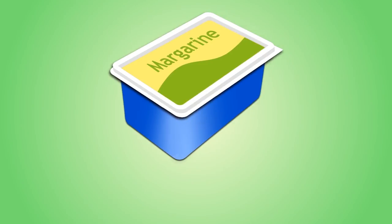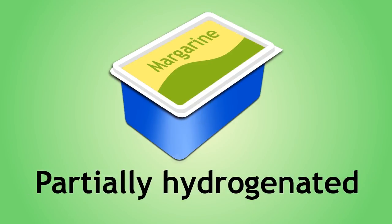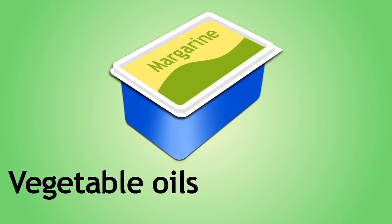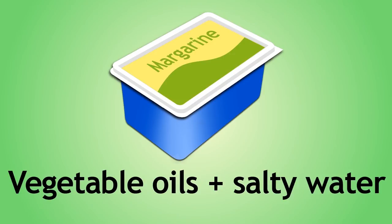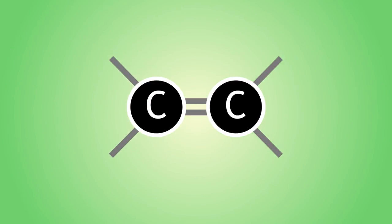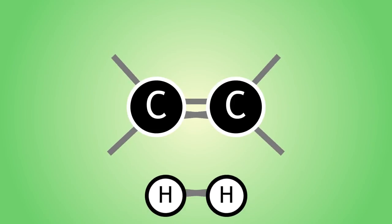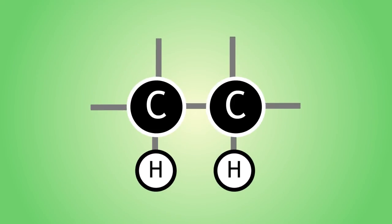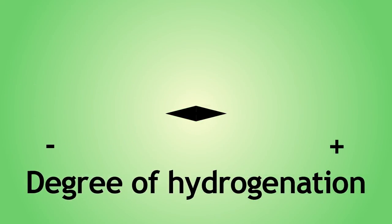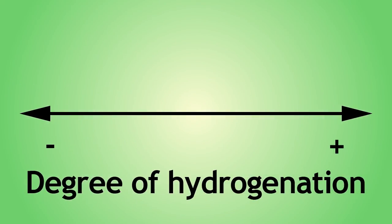In summary, margarine is an emulsion of partially hydrogenated vegetable oils and salty water. When vegetable oils are hydrogenated, a molecule of hydrogen is added across a carbon-carbon double bond. This hardens the oil, and the degree of hydrogenation can be varied to give softer or harder oils.